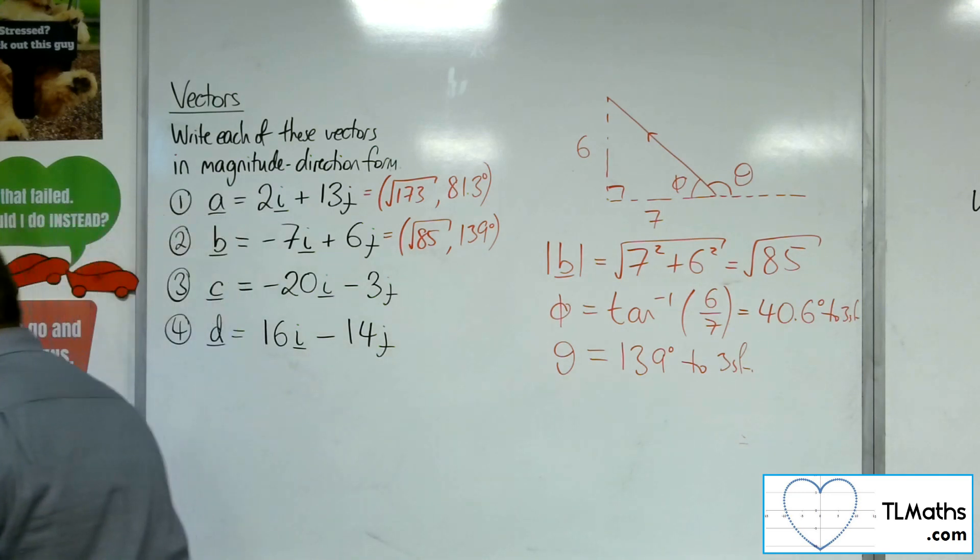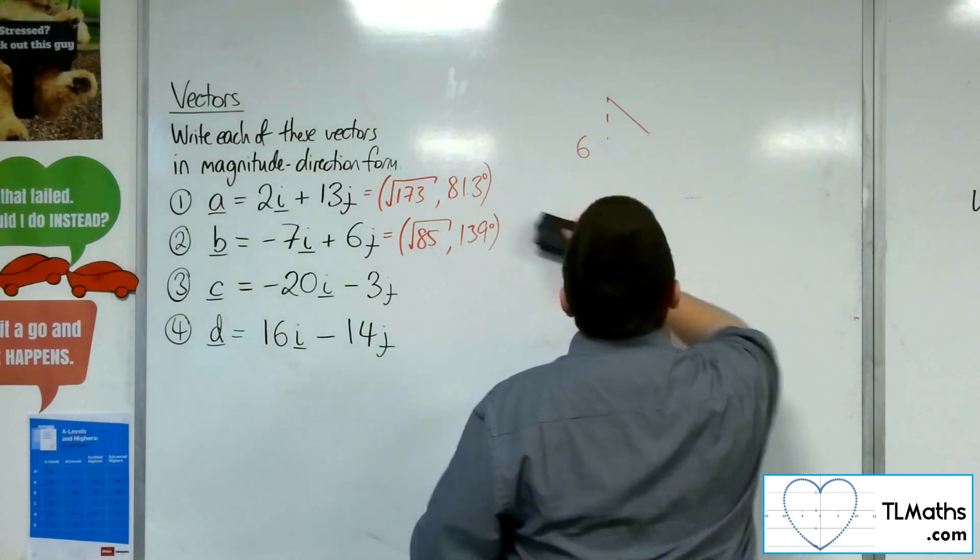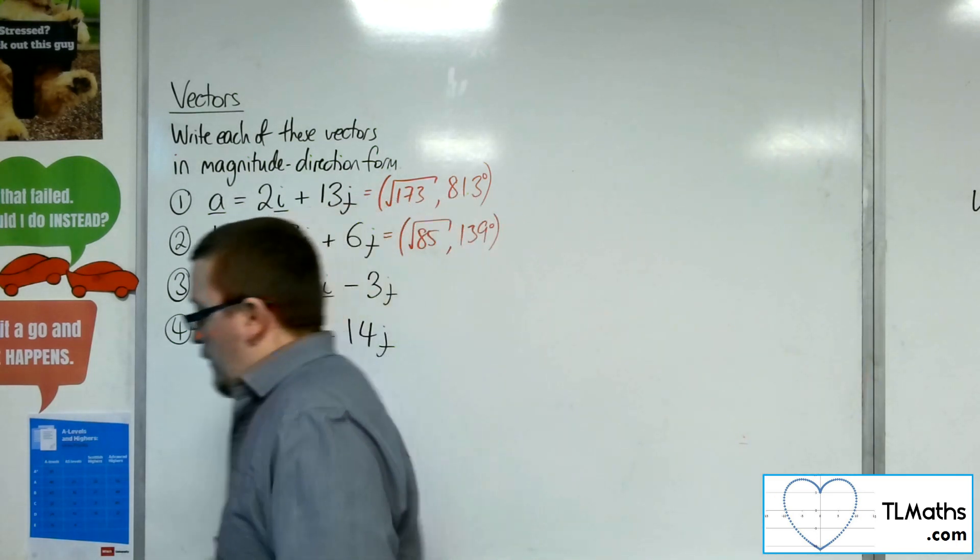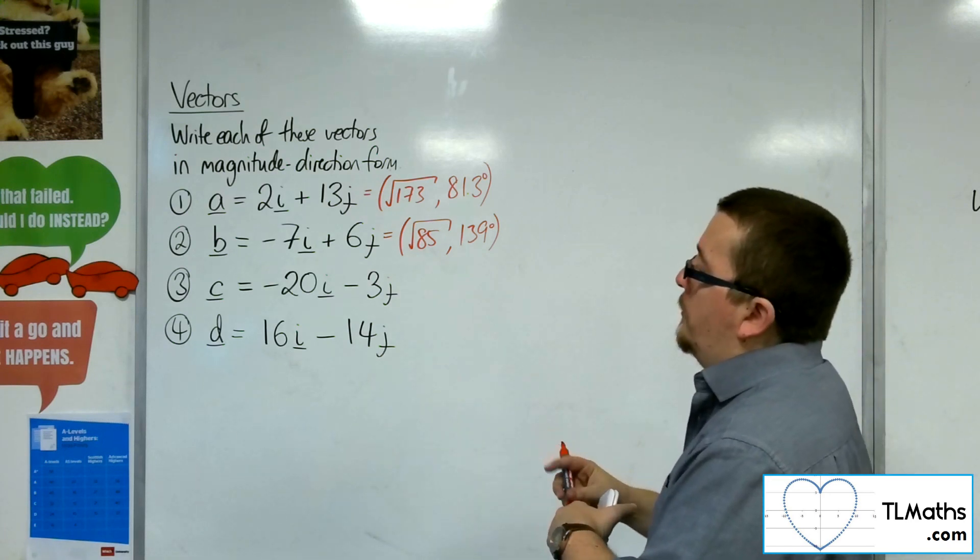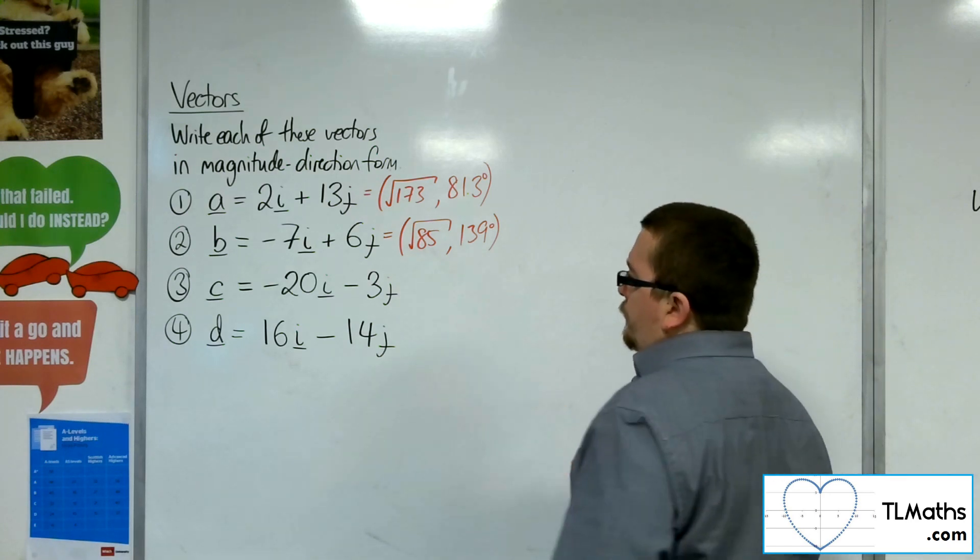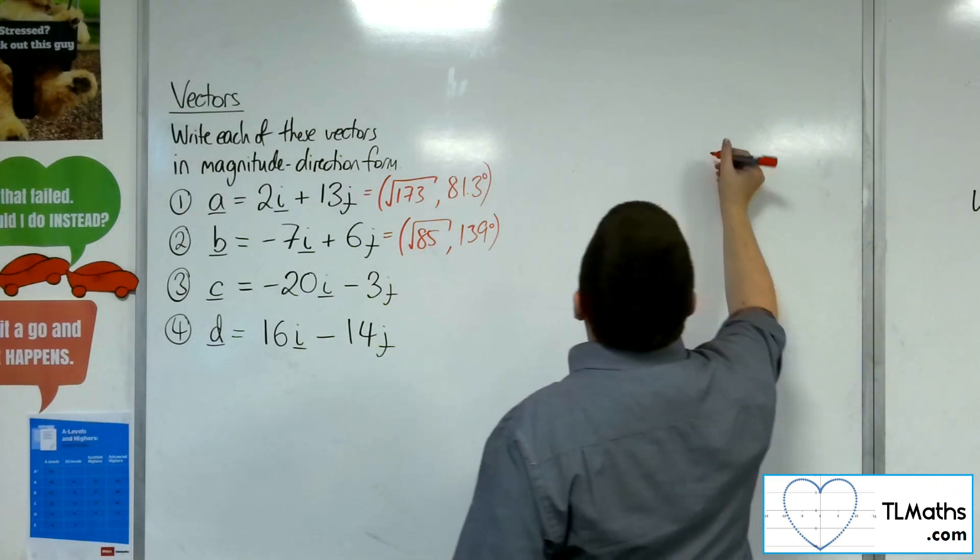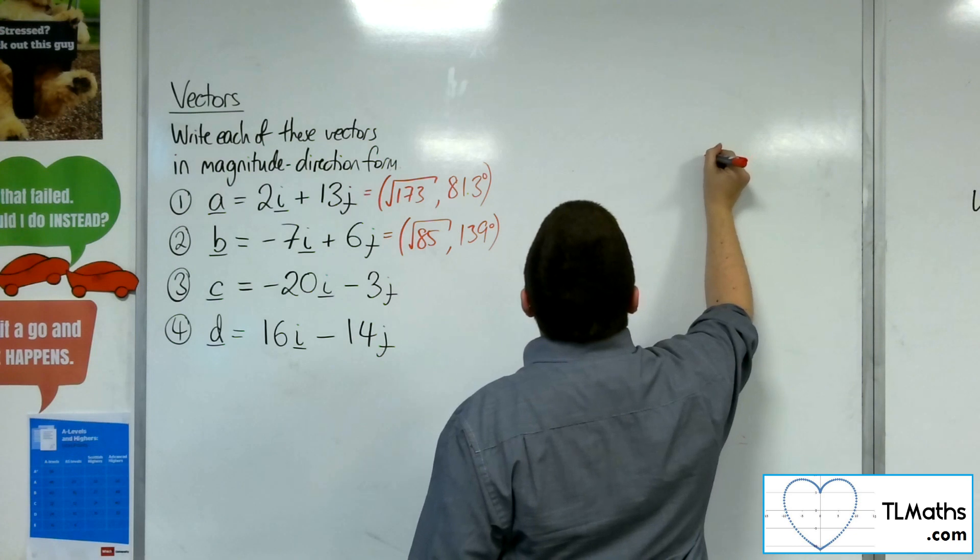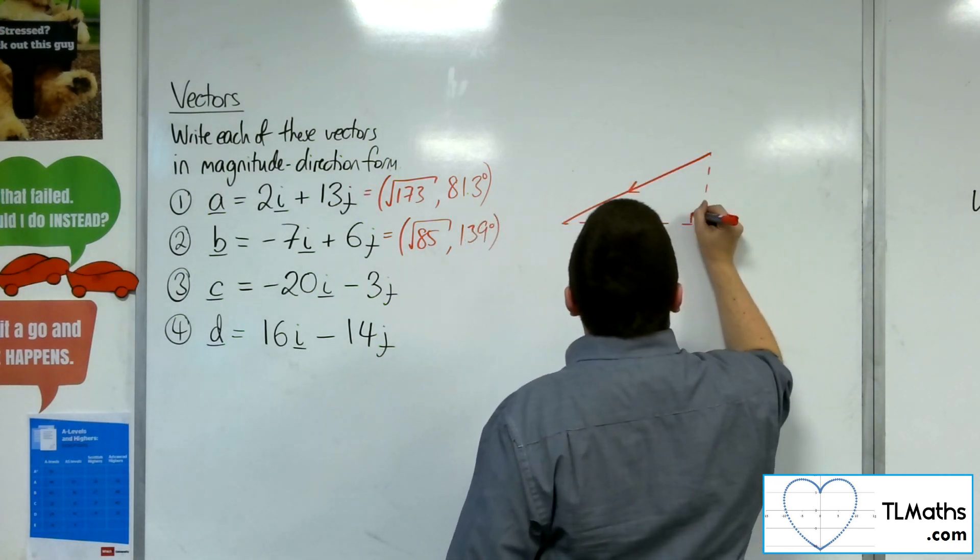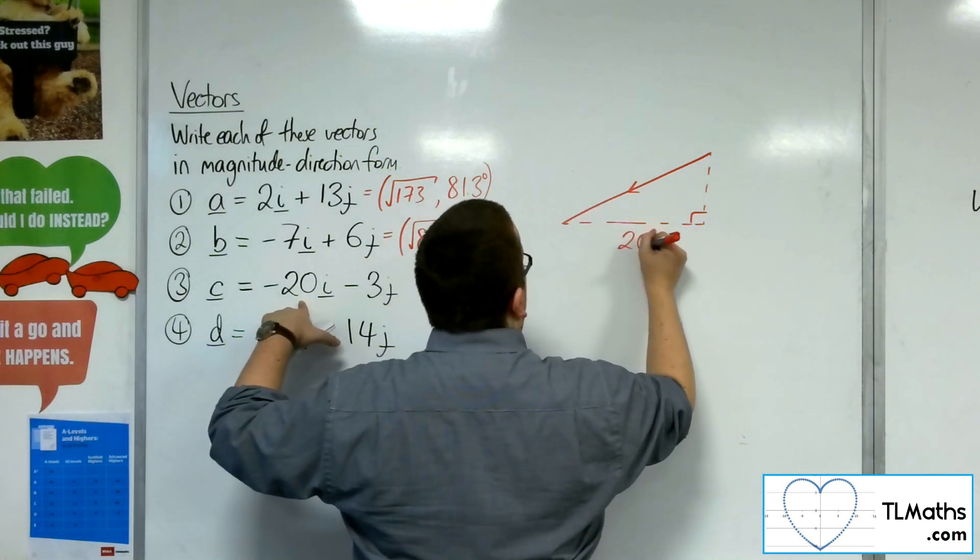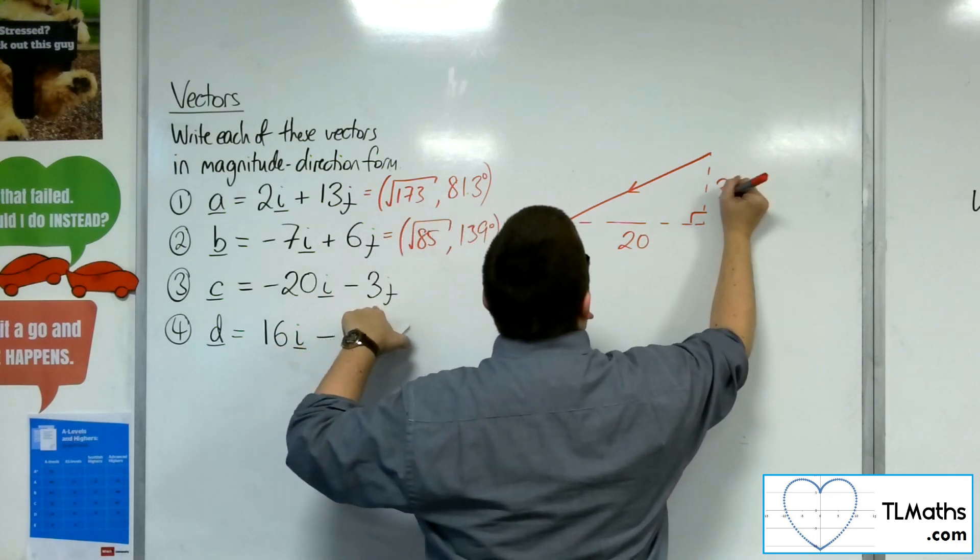Right. So, number 3, c equals minus 20i take away 3j. So minus 20i, so going back along that way and then down. So it's going to be a vector that looks something like this. Right-angled triangle. So 20 along in the, back along the x-axis and 3 down.